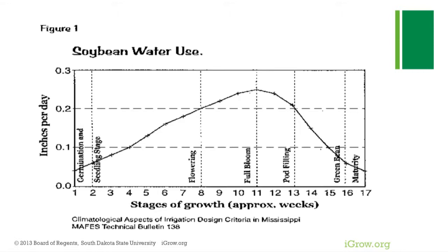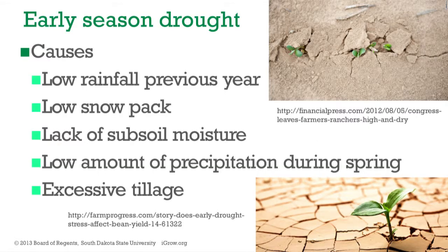For soybean water use: at germination we don't need much water. The critical water periods are at flowering, full bloom, and pod fill — those are very, very important. But we do have early season drought to discuss first.